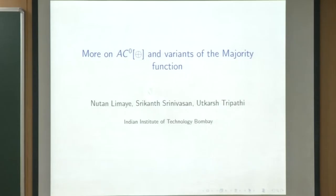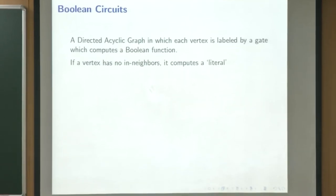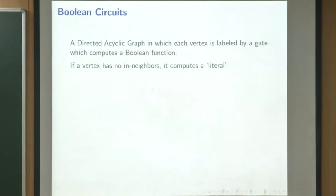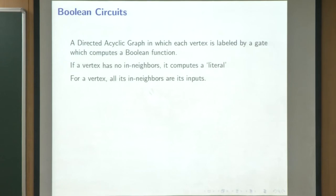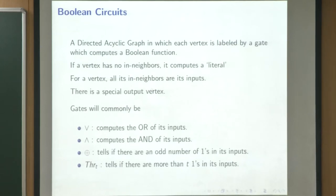I will talk about two results on AC0 parity, but let us first quickly go through some definitions. Boolean circuits are directed acyclic graphs where each vertex computes a Boolean function represented by its gate. Vertices without in-neighbors are inputs, and there is a special vertex called output. We are mostly interested in OR and parity gates.